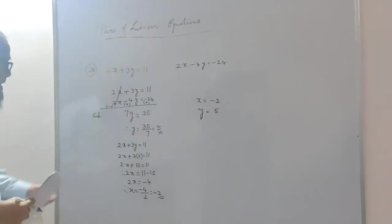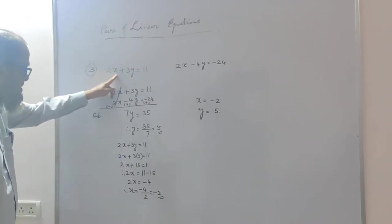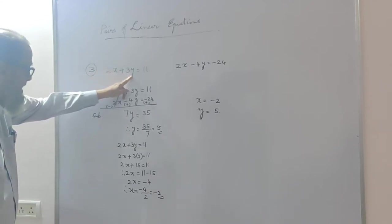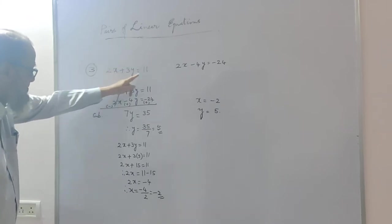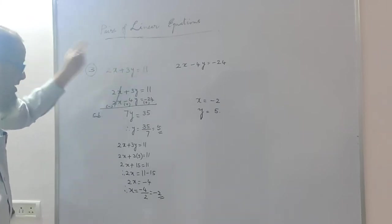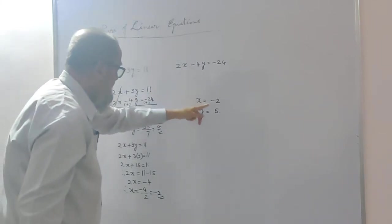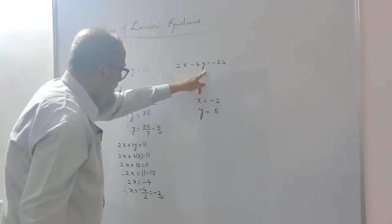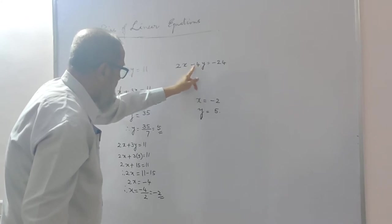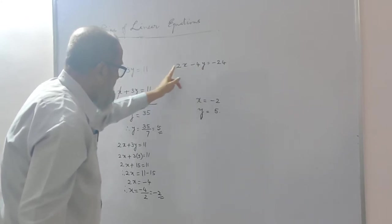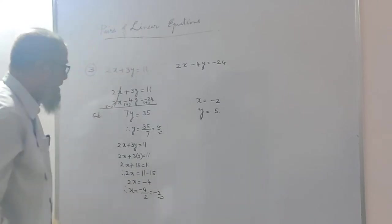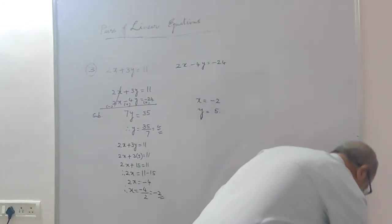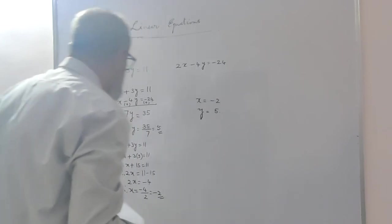Verification: 2 into minus 2 is minus 4, plus 3 into 5 is 15. So minus 4 plus 15 is equal to 11 — correct. For the second equation: 2 into minus 2 is minus 4; minus 4 times y which is 5 gives minus 20. Minus 20 minus 4 gives minus 24. That equation is also satisfied. Both answers are correct and you will get 2 marks there.